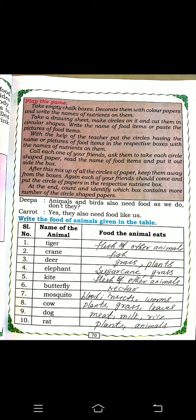Butterfly sucks nectar from flowers. Mosquito sucks blood and eats insects and worms. Cow eats plants, grass, and leaves. Dog eats meat, rice, and drinks milk. Rat eats plants and animals. These are the food items that various animals eat.